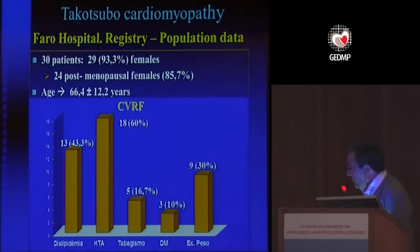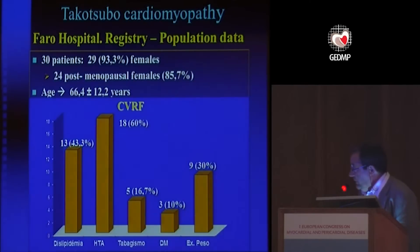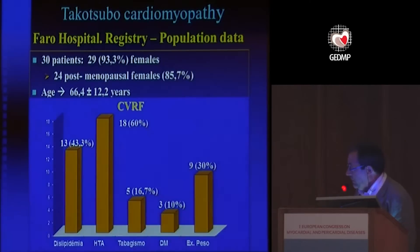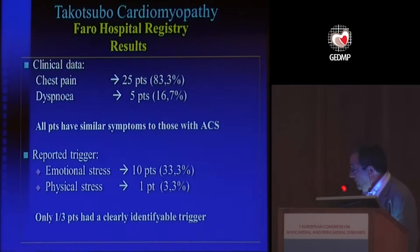You can see that 29 were female, as usual, and 24 were postmenopausal females, with a mean age of around 66. The cardiovascular risk factors are similar to those of other populations in this age group.